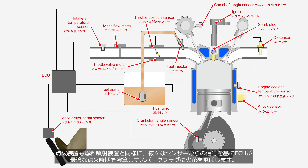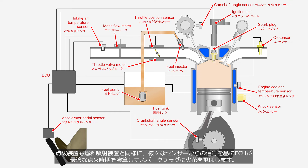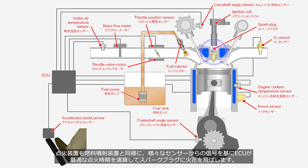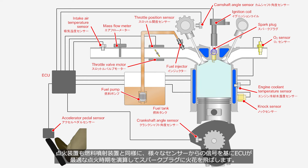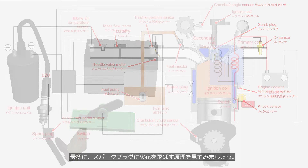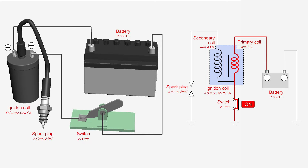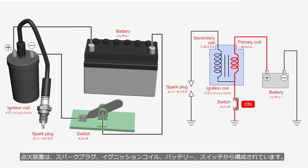Similar to the fuel injection system, in the ignition system the ECU calculates the optimal ignition timing using signals from various sensors and generates sparks at the spark plug. The ignition system consists of a spark plug, ignition coil, battery, and switch. Inside the ignition coil, there are two coils: the primary coil and the secondary coil.